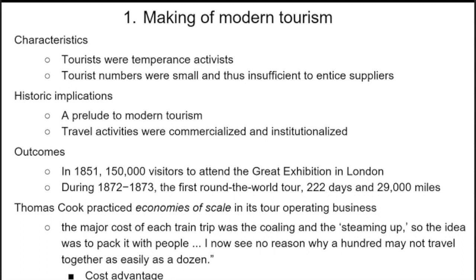Thomas Cook worked as a tour operator trying to get more tourism across England. The major cost of each train trip was the cooling and steaming up, so the idea was to pack in more people — there's no reason why a hundred may not travel together because it costs the same as a dozen. He was focusing on economies of scale so more people could travel for the same cost as one person.